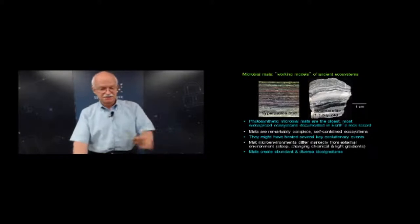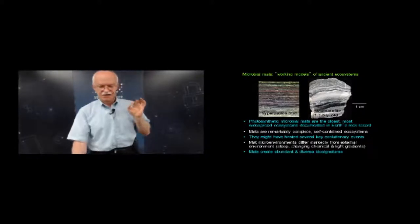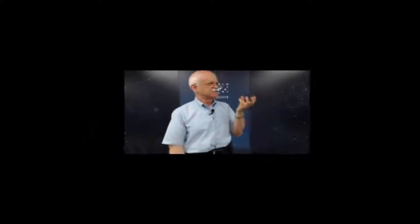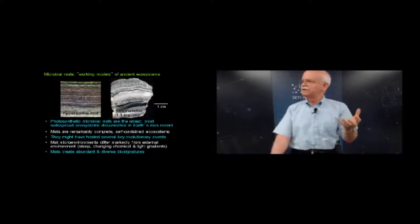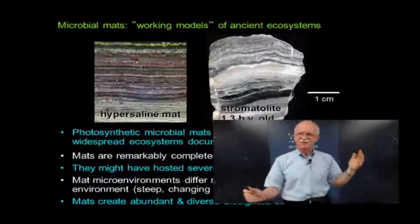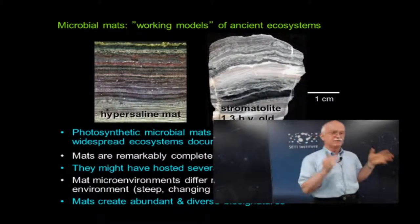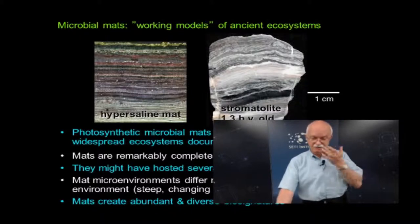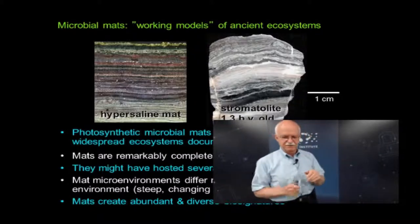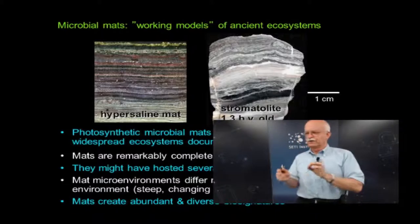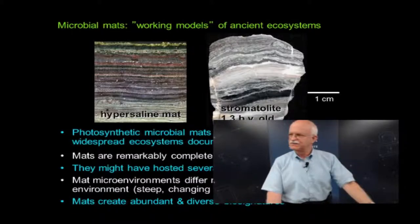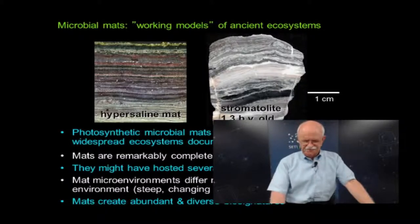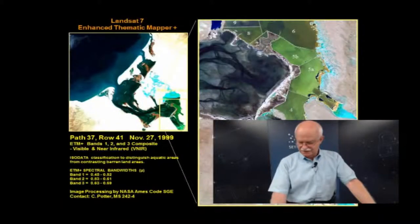Because we're talking about communities with ancient records, this ecosystem probably hosted several very key evolutionary events in the early biosphere. To the extent we can learn more about what those might have been by studying modern descendants of these communities, that's a great research possibility. Another key important point is that the microenvironment within the mat is markedly different from the external environment. If you take an organism out of that and try to grow it in culture in the lab, you're subjecting it to an environment radically different from the one in which it evolved. Organisms can behave quite differently in one environment versus the one that harkens back to billions of years ago.